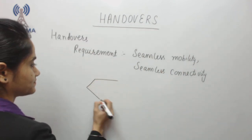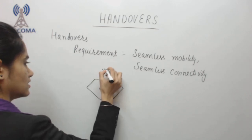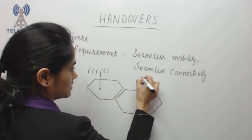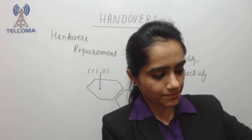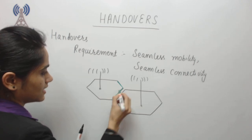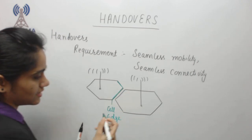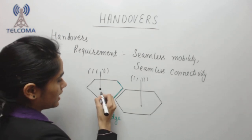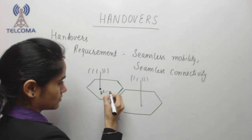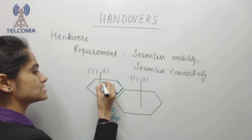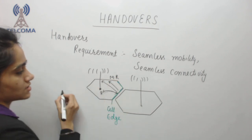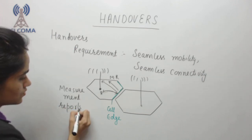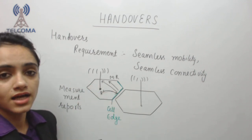For this requirement we have the concept of handovers. This is one cell and this is another cell — we call this the cell edge. If this is a cell edge, the quality of the signal being received is not good compared to the center of the cell. Now if we have a user equipment (UE) that starts moving and reaches the cell boundary, it always sends an MR — MR stands for measurement report.